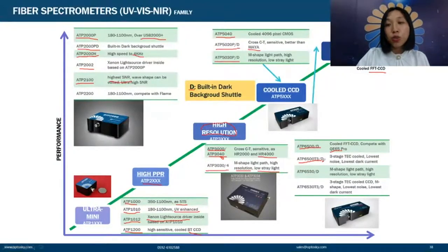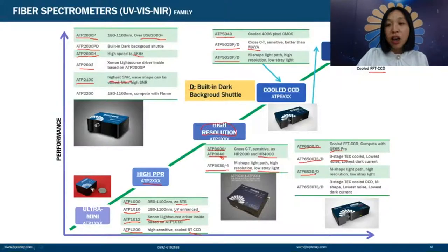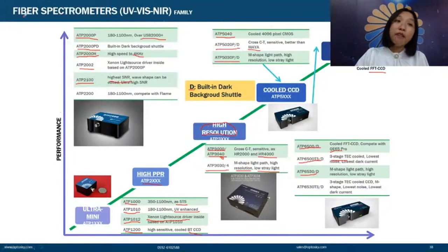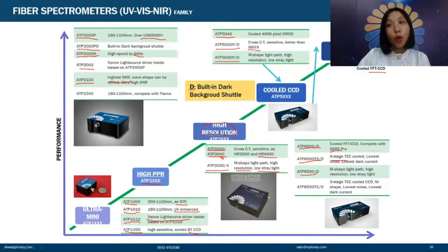The ATP-6500 competes with Ocean Optics QE-65. The ATP-6500-T3 offers three-stage cooling down to 55 degrees below ambient temperature. The ATP-6530 uses M-shaped optical path with built-in dark background shutter. Optosky offers the most complete spectrometer series for UV-visible and NIR — whatever your application, we can configure the best model for you.